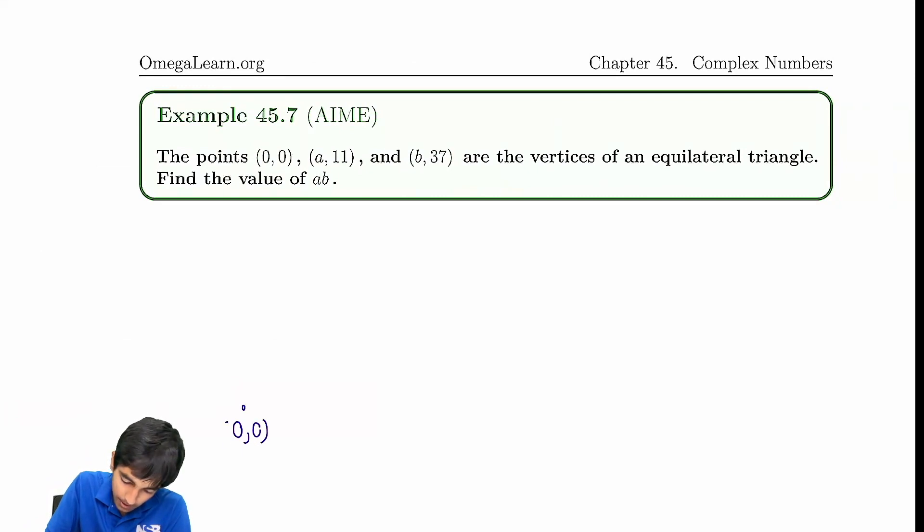We've got (0,0), (a,11), (b,37). They form an equilateral triangle. What's a, b?